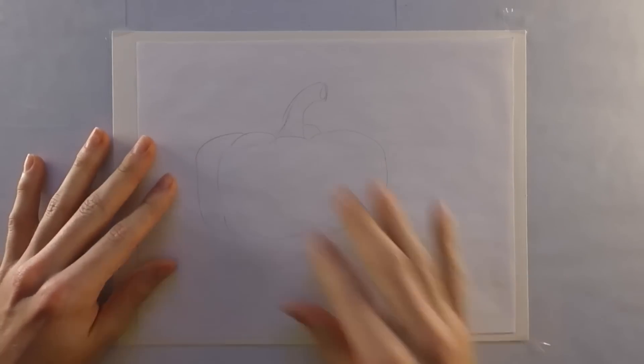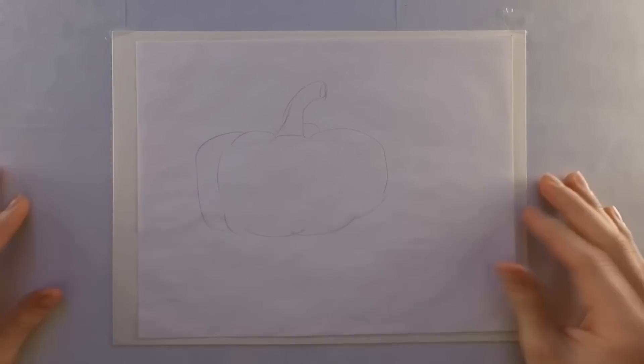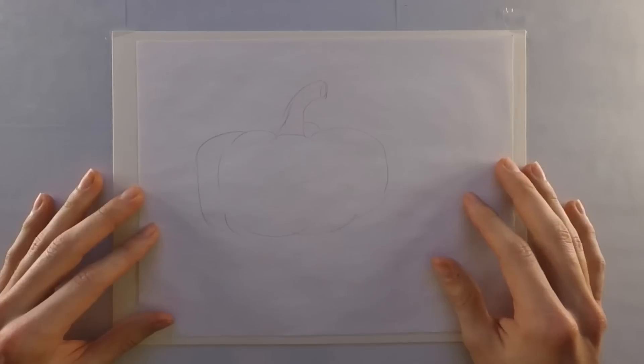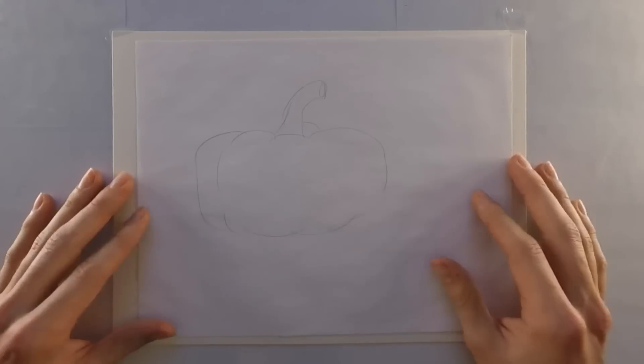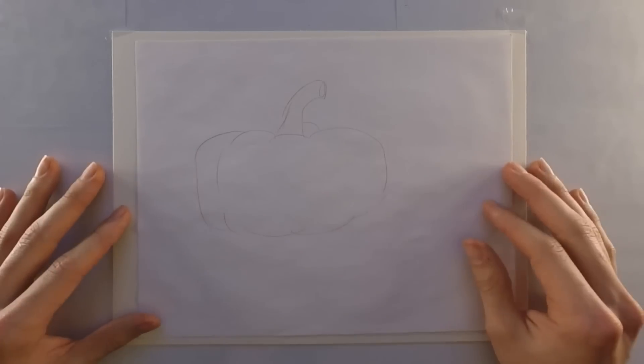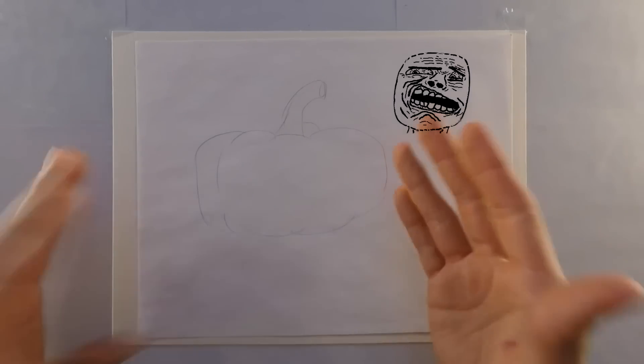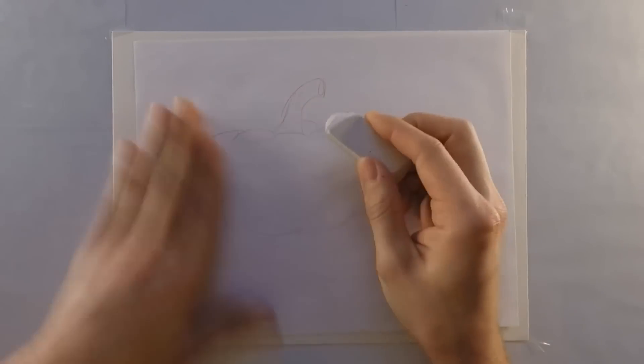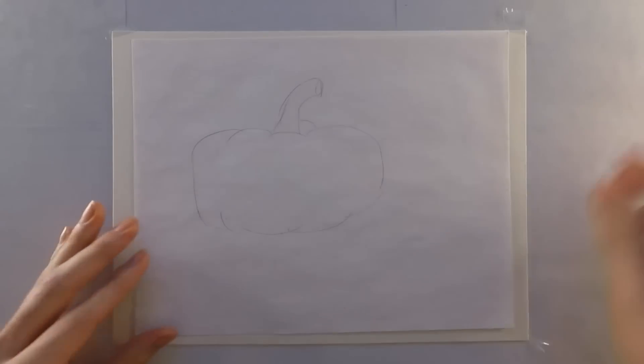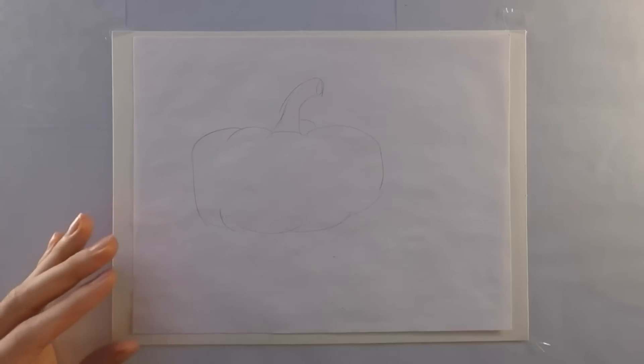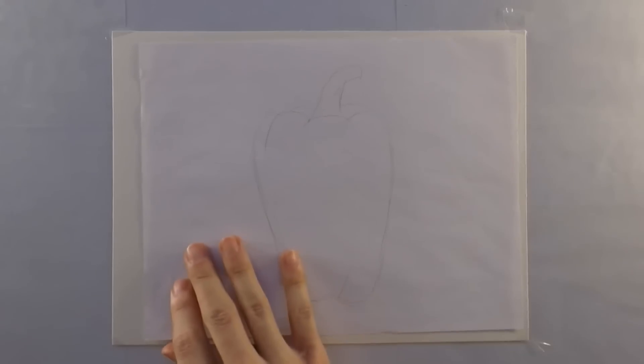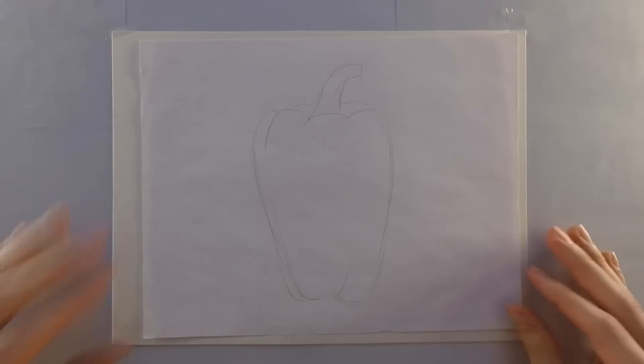When you do your initial sketch, maybe you look at it and you sketched it. And for this example, I'm going to draw a bell pepper. And I look at my sketch and I think, it's a pretty good sketch, but this doesn't look much like a bell pepper. It kind of looks like a lumpy pumpkin. And I don't want to start erasing it and trying to fix my lumpy pumpkin into a pepper. So what do I do? I'm just going to sketch it again. And so that's what I do. And I look at this sketch and I was like, okay, it looks a lot less like a lumpy pumpkin.